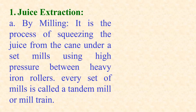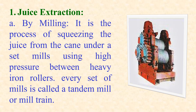In the sugar manufacturing industry, the sugarcane juice is extracted by the process of milling. The sugarcane is squeezed under a set of mills using high pressure between heavy iron rollers. Every set of mills is called a tandem mill or mill train. In order to improve the extraction efficiency, imbibition water is added at each mill. Those mills can have from three up to six rolls. Here is an image of a tandem mill.